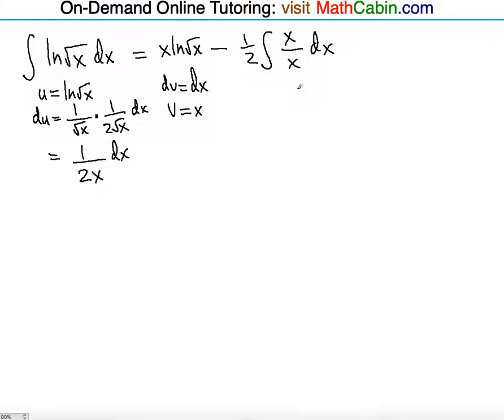So again, this equals to x ln of square root of x. Minus 1 half integral of 1 dx, because x over x is 1. And then you get x.